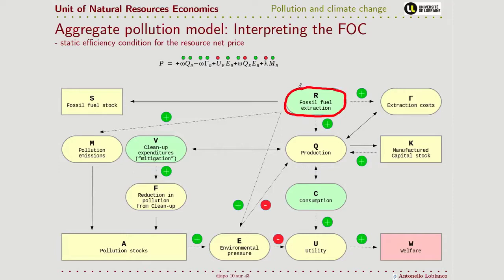For this decision, the marginal cost of extracting the resource, or equivalently the marginal benefit of not extracting, is the price of the royalty of the resource. The marginal benefit is what we already saw: the marginal production multiplied by either the shadow price of capital or the marginal utility of consumption, and this term is positive — this is the gross benefit.